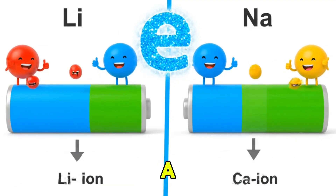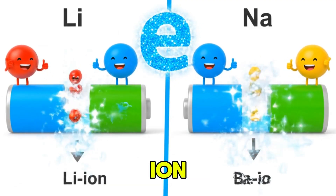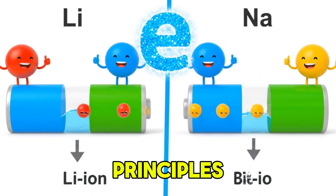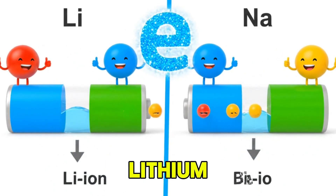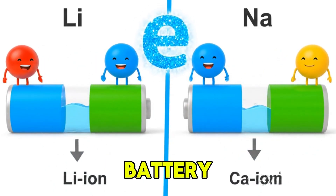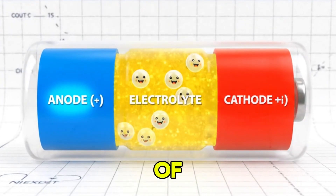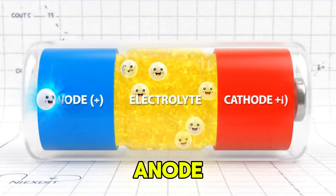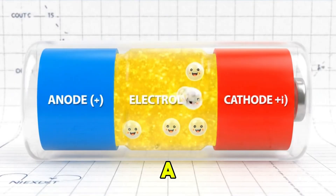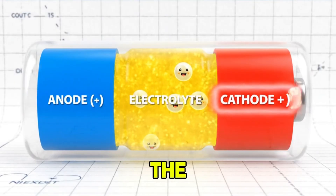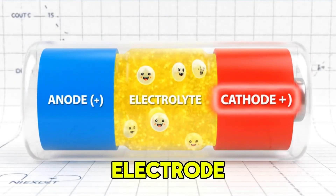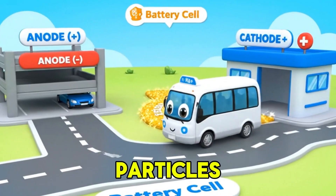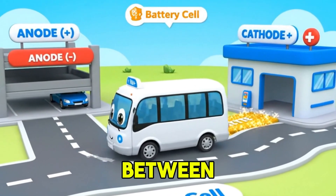At its core, a sodium ion battery functions on the same fundamental principles as a lithium ion battery. The basic blueprint of the technology consists of an anode, the negative electrode, a cathode, the positive electrode, and an electrolyte that allows charged particles to move between them.